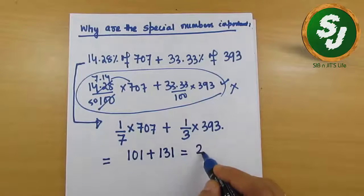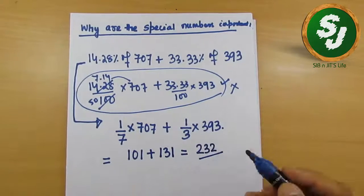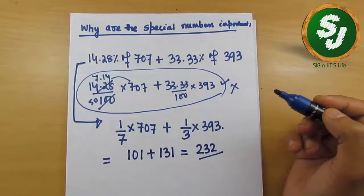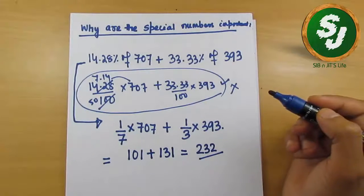So your answer is 232. This is how a question is solved using the concepts of spatial numbers.